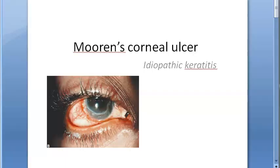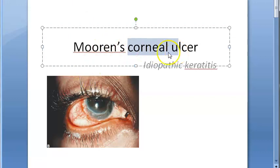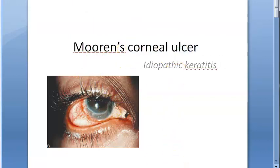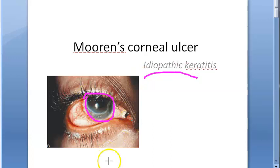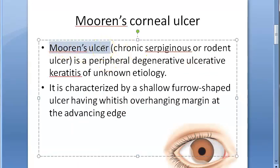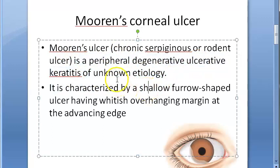In this video, let us look at Mooren's corneal ulcer. This is basically an ulcer of the cornea, but they don't know why it happens, so it is idiopathic keratitis. The guess is that it is immune-mediated. Mooren's ulcer is a peripheral degenerative ulcerative keratitis of unknown etiology — they do not know why, so unknown means idiopathic. It is also chronic.